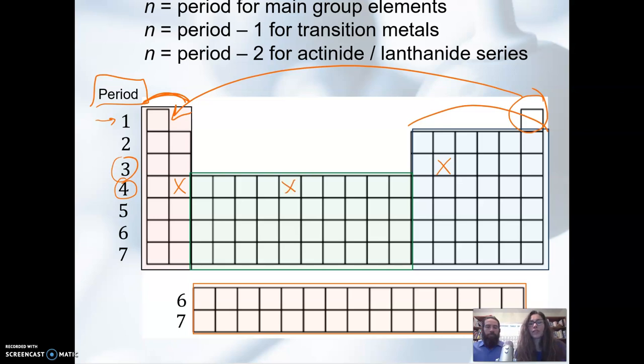But once you get into the transition elements, it's here in the green, now n is the period minus one. So this n value is four minus one or three.